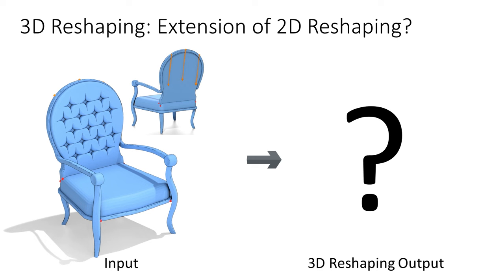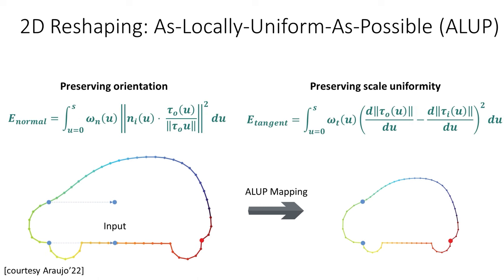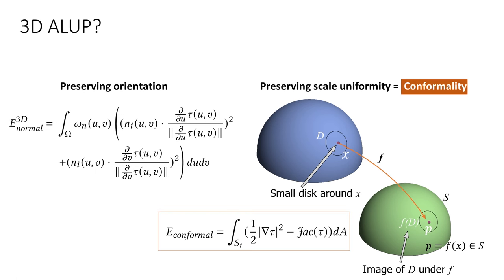The question is how do we do it? Araujo and colleagues named their method ALEP, or "as locally uniform as possible." Their method attempts to maximally preserve curve orientations and to scale curves as uniformly as possible locally while satisfying reshaping constraints. We observe that in 3D, asking for reshaping to scale inputs uniformly is equivalent to requiring the reshaping to be conformal.